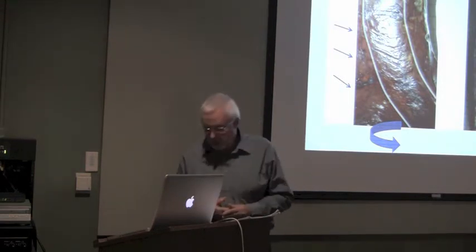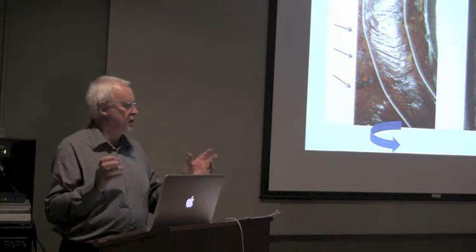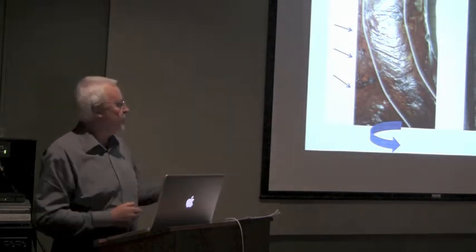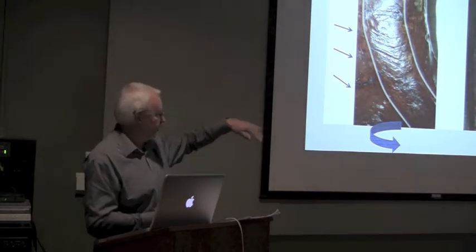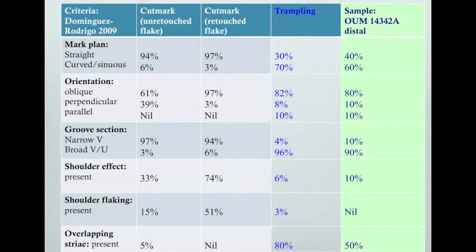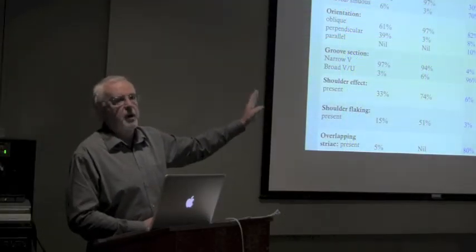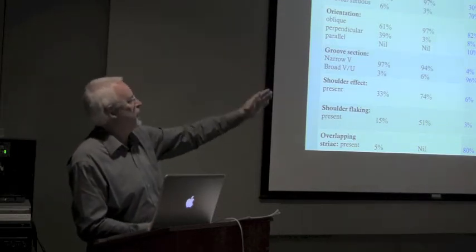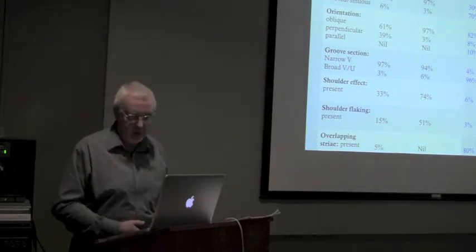When you look at the actual characteristics of the damage that's on the surface of this bone in the sample on the right hand side there and compare it with the criteria which are used to distinguish cut marks from trampling marks by people who are specialists in this kind of thing, you can see very clearly that our sample conforms quite precisely with the evidence of trampling and not at all with the evidence of cut marks.